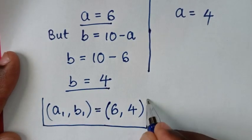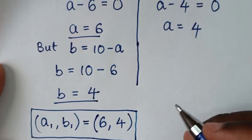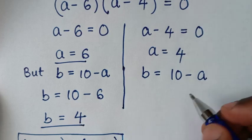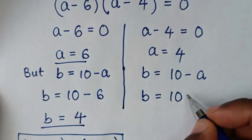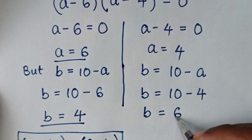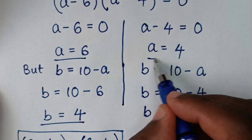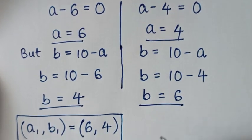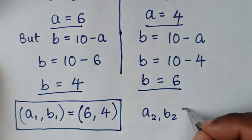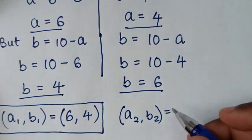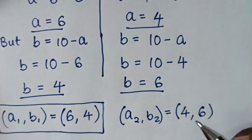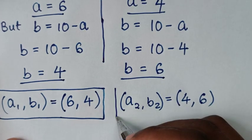Now from the second solution, b is equal to 10 minus a, and a is 4. So it will be b is equal to 10 minus 4, which is 6. So from this second solution, A is 4 and B is 6. So A2 comma B2 is equal to 4 comma 6. Therefore, this is the second solution.